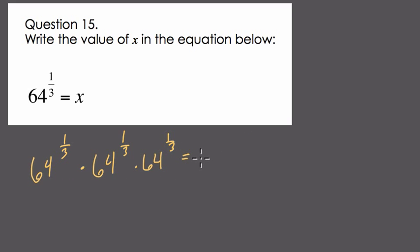Well, since the bases are the same and we're multiplying, we still get the same base, and then we add our exponents. This is the basic law of exponents: one-third and one-third and one-third. And what is one-third plus one-third plus one-third? That's one.